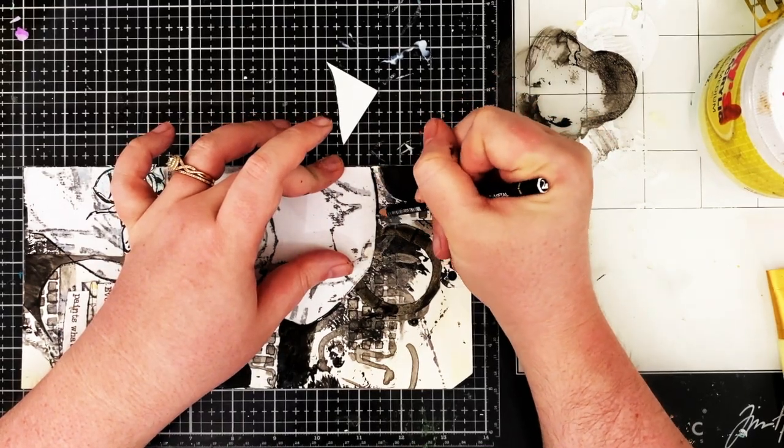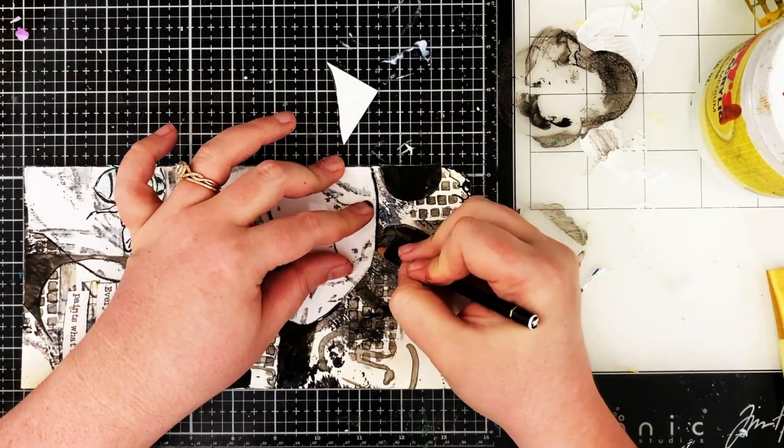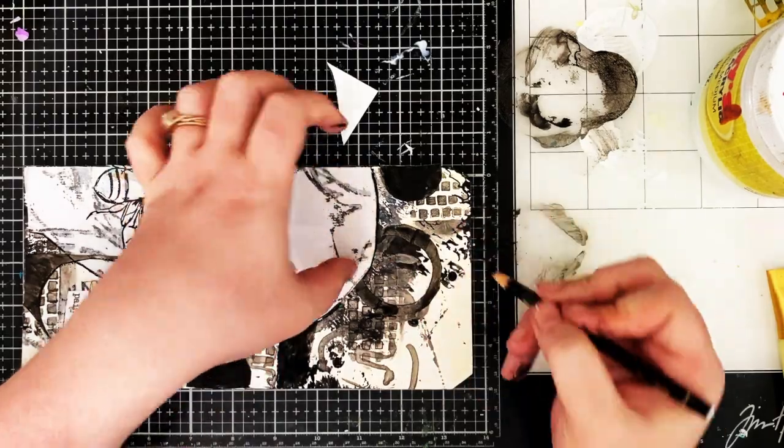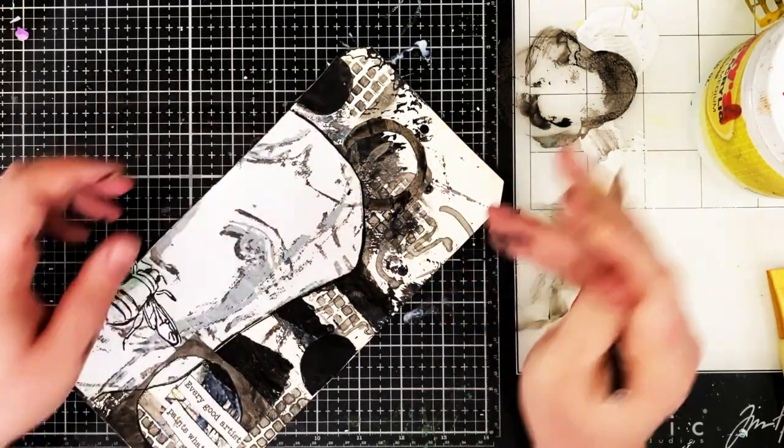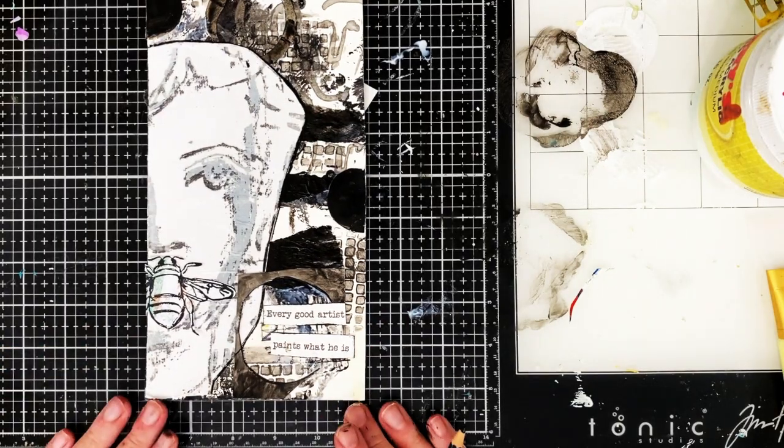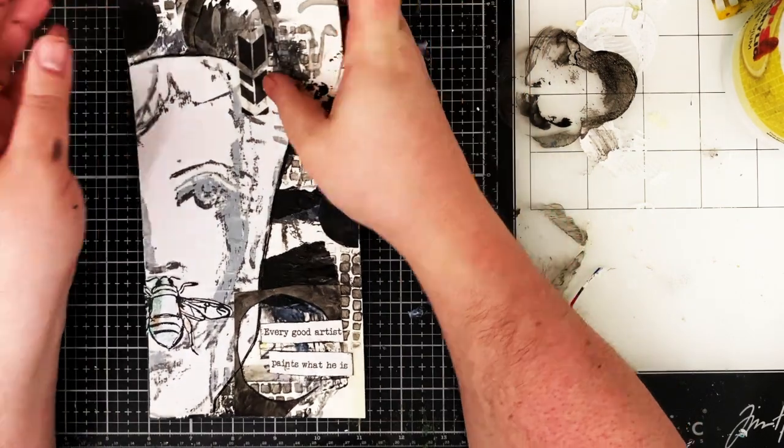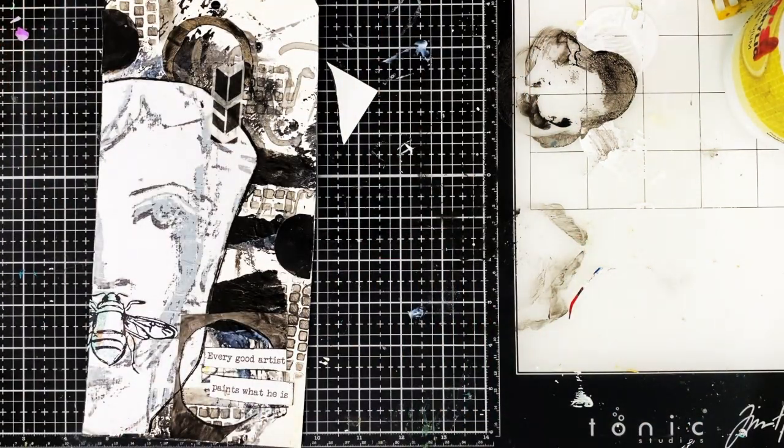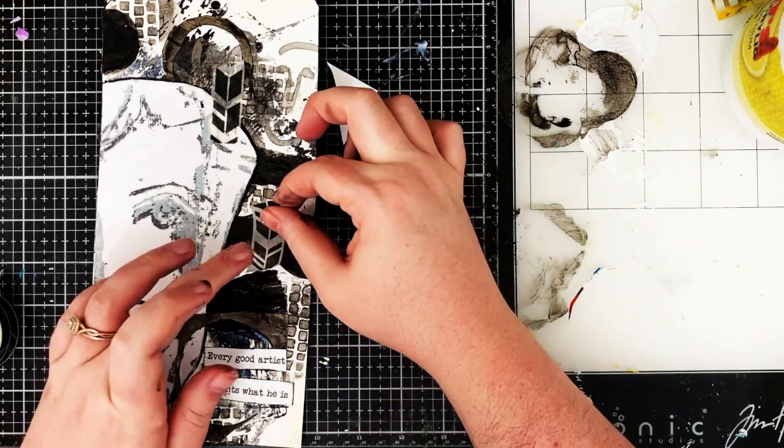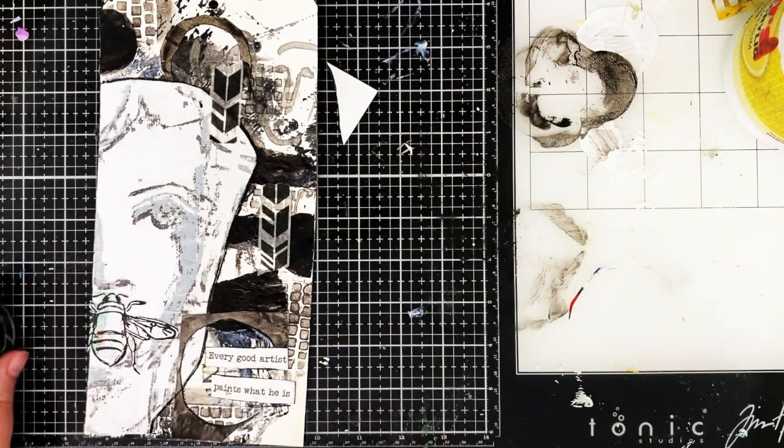I'm using a Stabilo to outline her head because even though I do have enough solid black to really let the face stand out a little bit, it still needs just a little bit more of a distinction. So I use this Stabilo to make that line of demarcation if you will. And because I don't feel like the tag is really finished yet, I'm adding some washi tape.